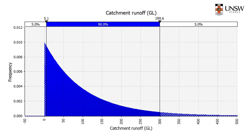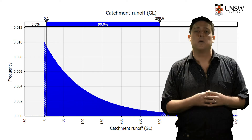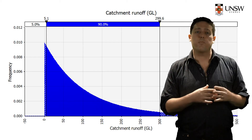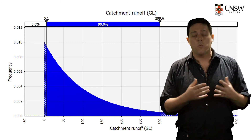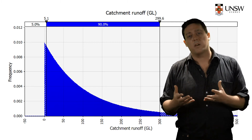Now let's say we have a 24-hour rainfall event that leads to a certain volume of runoff being generated and flowing into the dam. Rainfall over 24 hours is highly variable, so we could represent that by a PDF, which might look something like this.